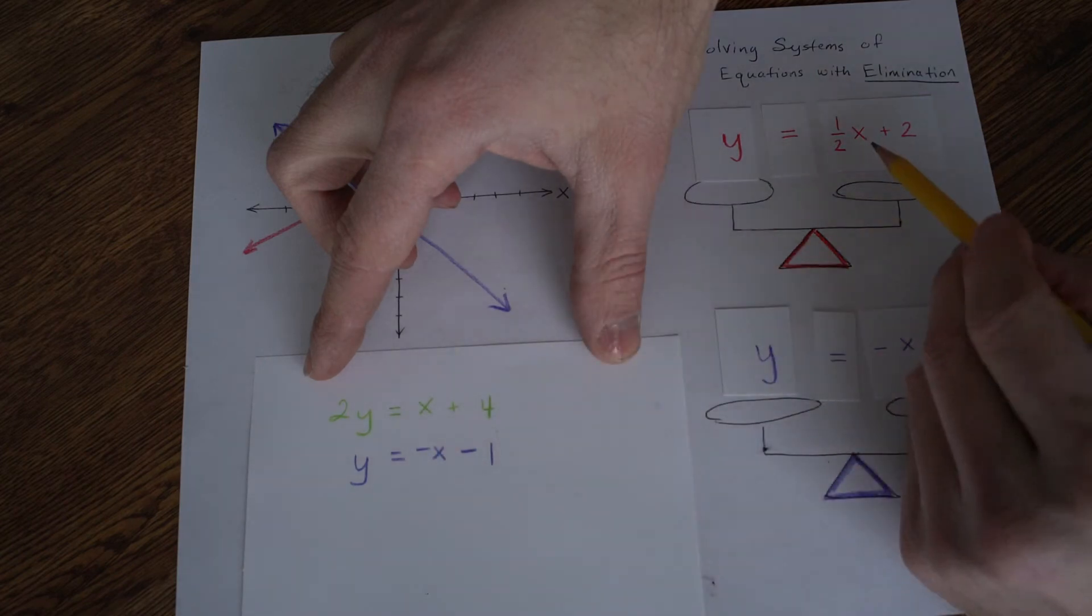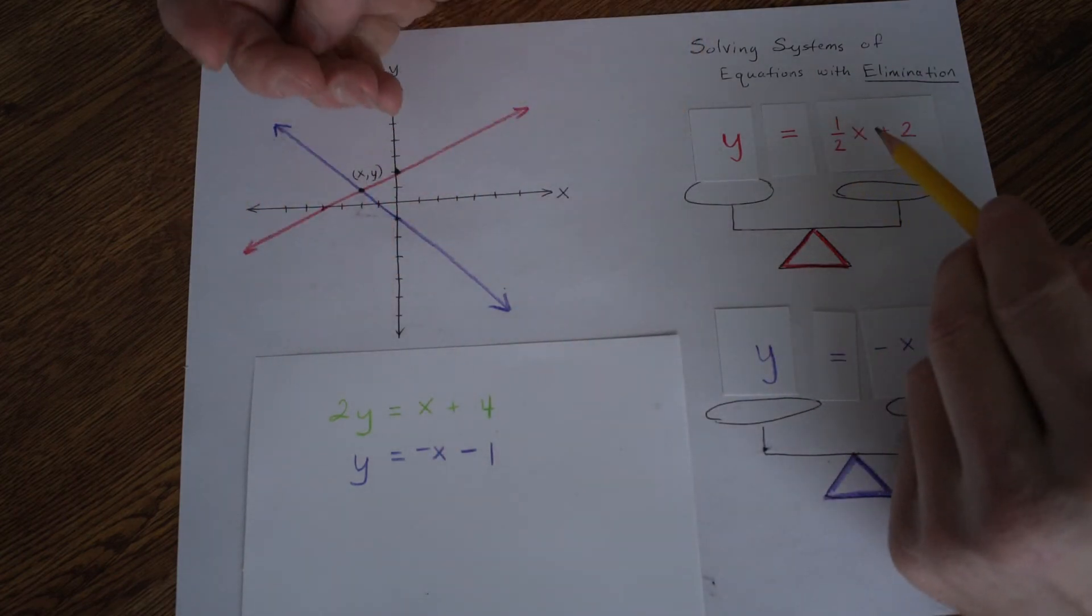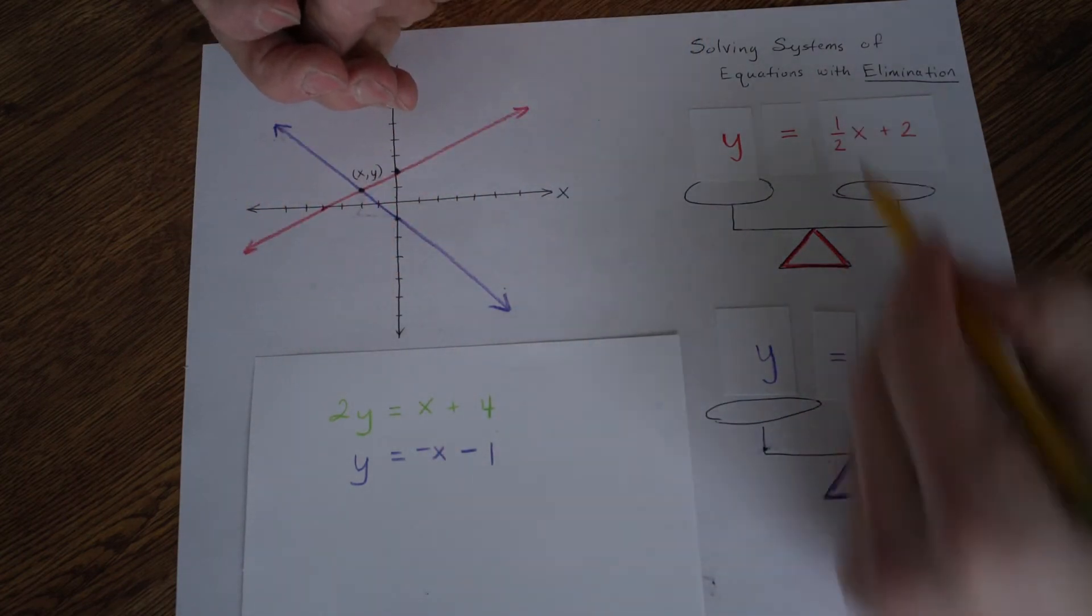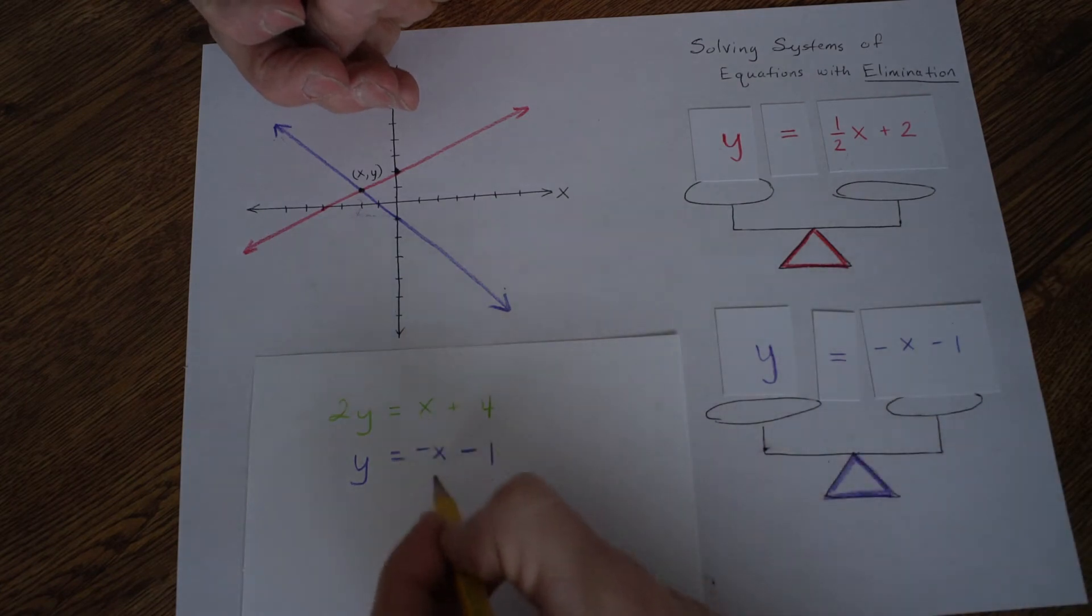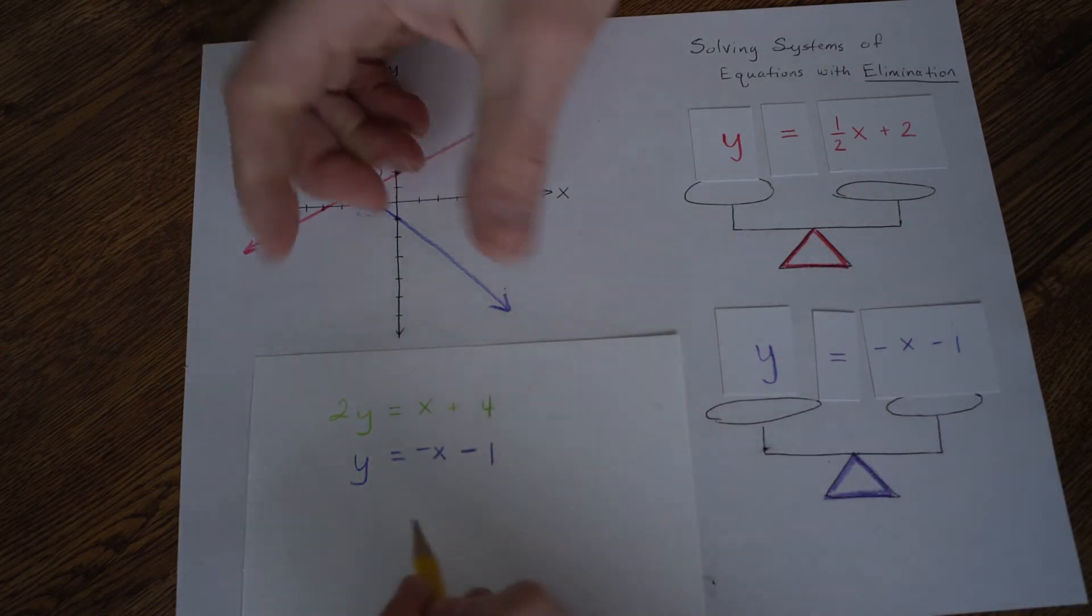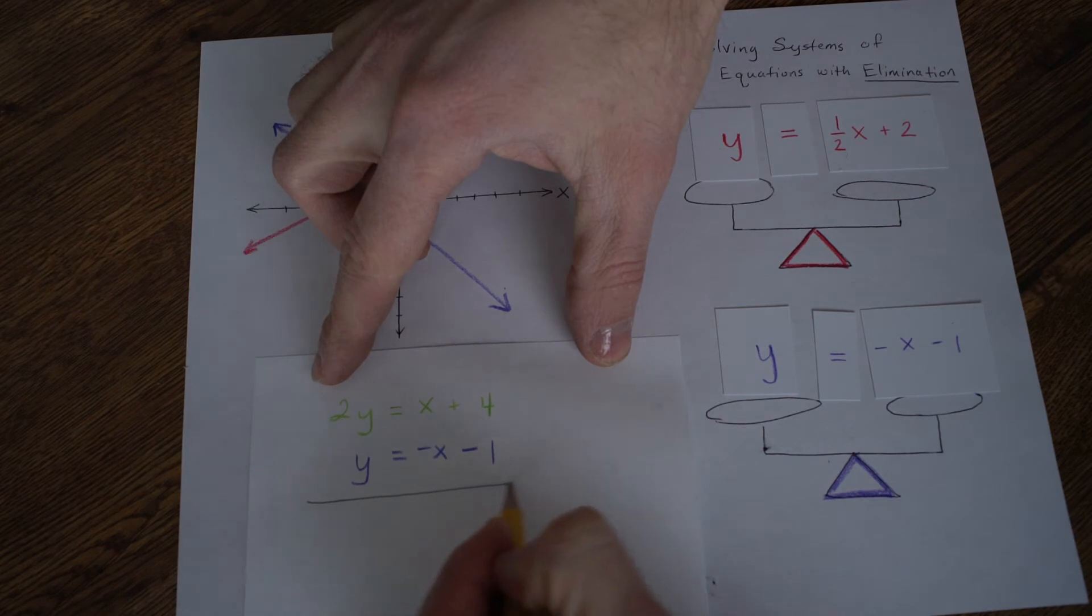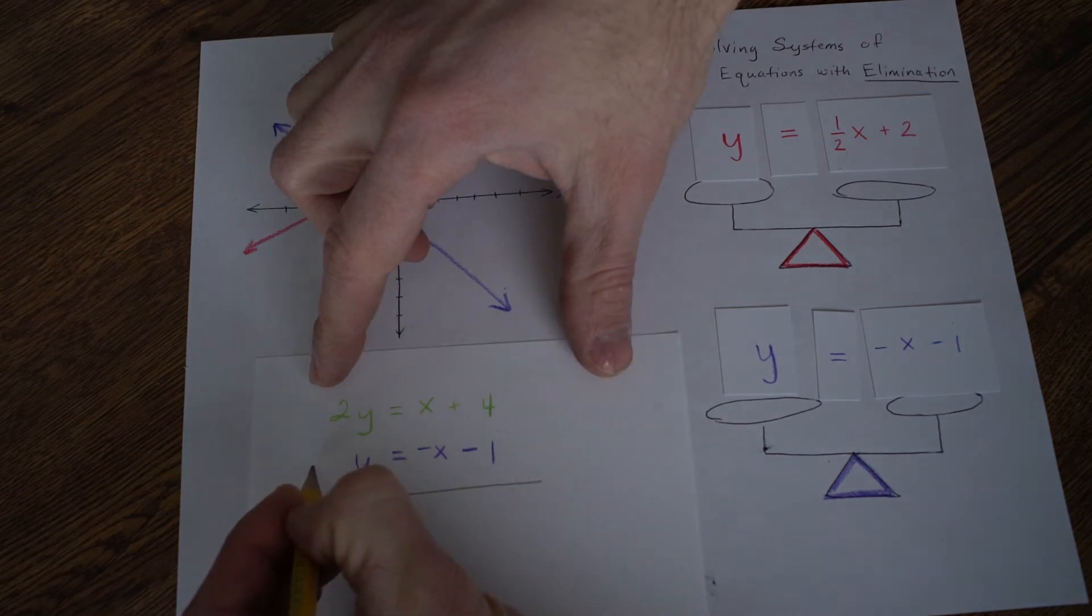Which it is now here in the green, if this right here, this red was a 1x, and I added these together, that x term would disappear. So it's like a magic trick. You're making something disappear. Love it.